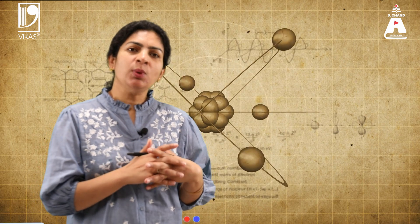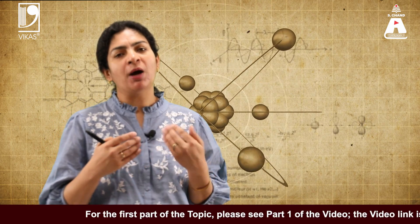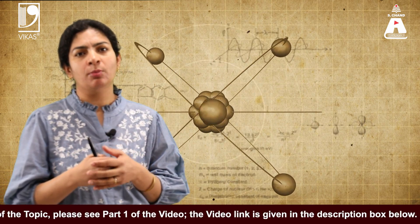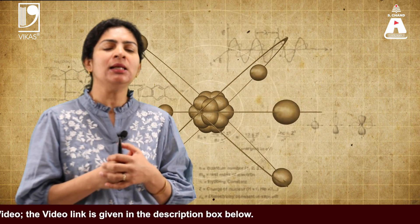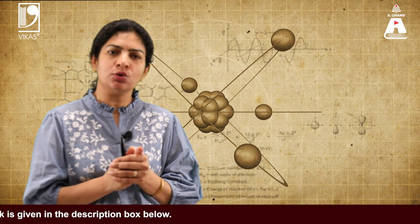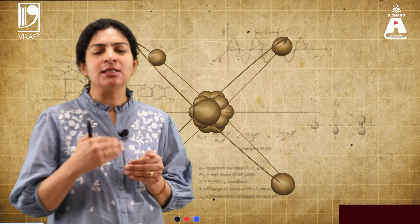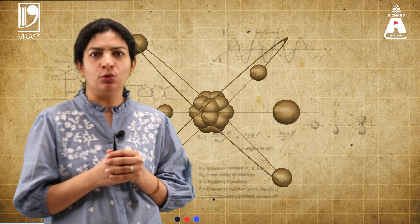In Part 1 we had learnt about the basic principle of NMR spectroscopy, and in Part 2 we are mainly going to talk about the origin of the signal in NMR spectroscopy and the basic components of a spectrophotometer.